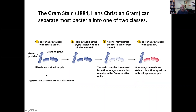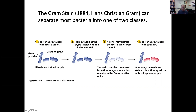So just a reminder: the way the gram stain works is that you fix the cells so they're dead and attached to the surface of your slide. Then we add crystal violet, and all the cells, whatever kind they are, will take up the crystal violet and they would be purple. The next step in the gram staining procedure is to add iodine to the cells. That iodine serves as a fixative to stabilize the crystal violet complex with cellular material.